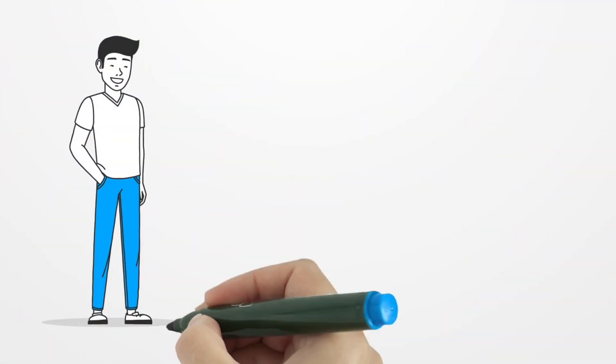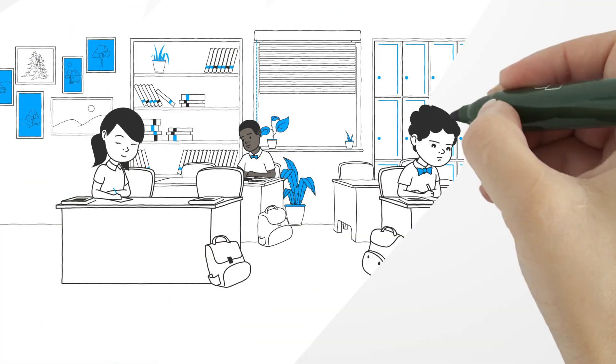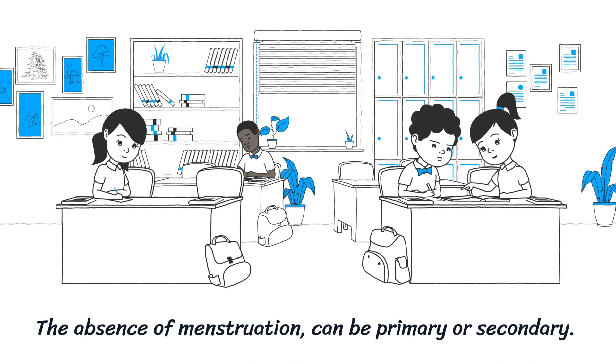Hello again, it's all these things. For watching today, the topic is amenorrhea. Let's begin. Amenorrhea, what does it mean? The absence of menstrual flow. Amenorrhea can be classified as primary or secondary.